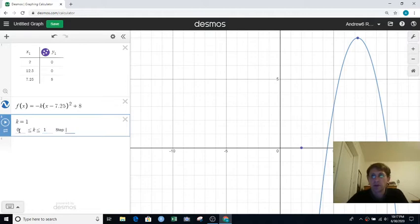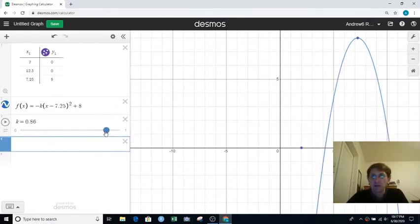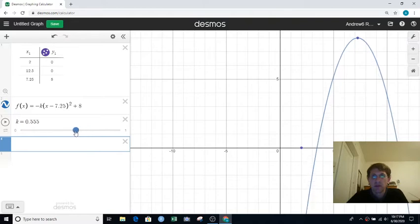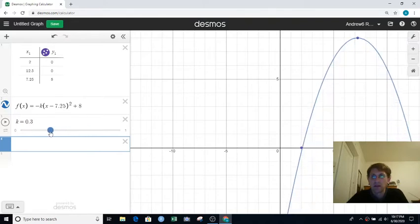And even at 1, the parabola is too tall. So I'm going to restrict the range to 0 and 1. So I'm making the parabola not as tall. And what do you think?